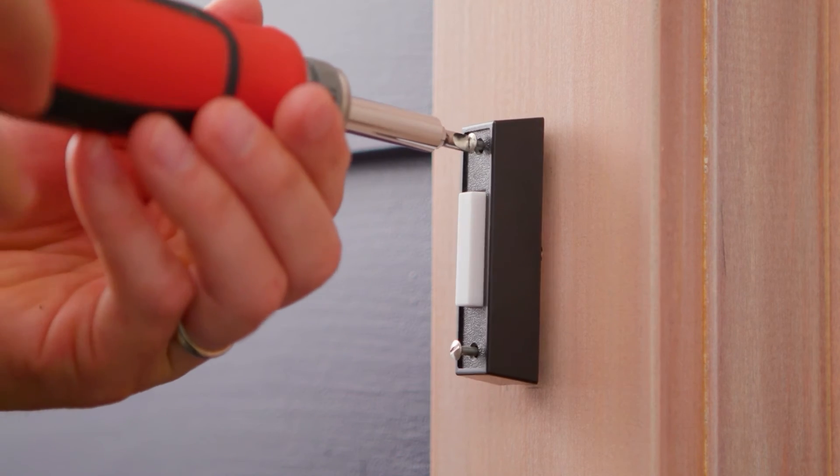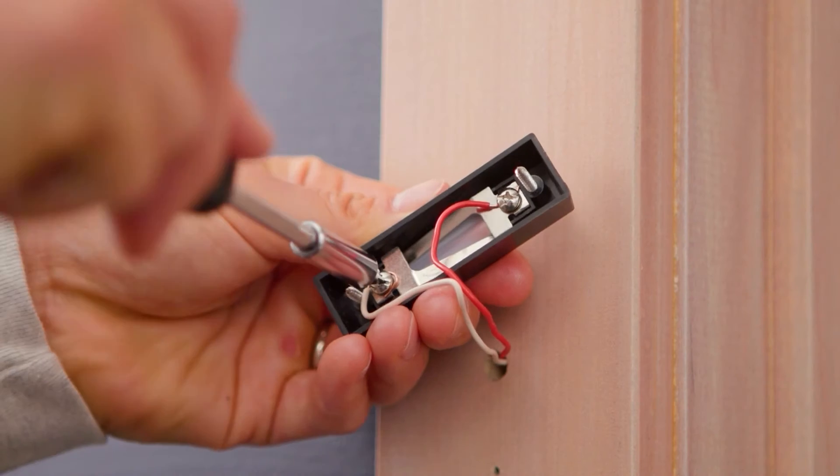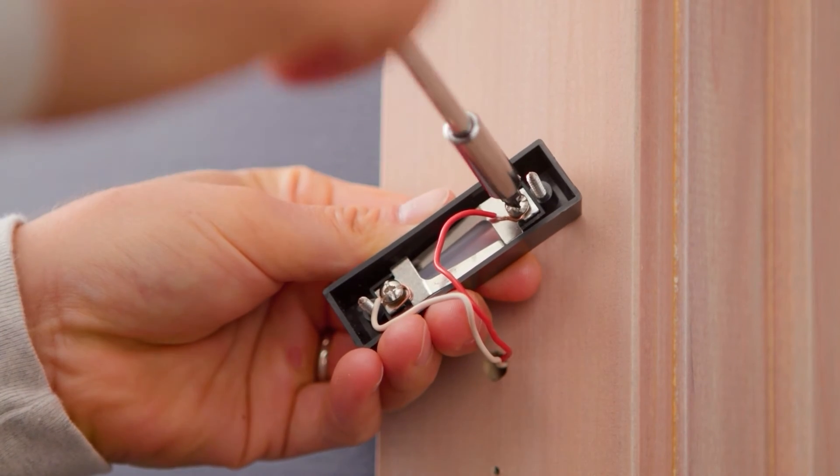Once the power is off, start uninstalling your existing doorbell by removing its screws and then loosening the screws that hold the wire ends.